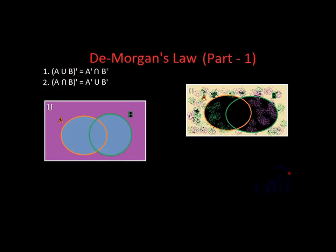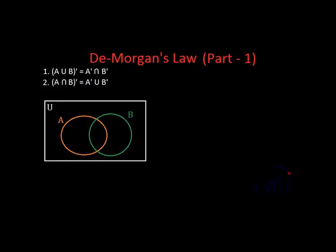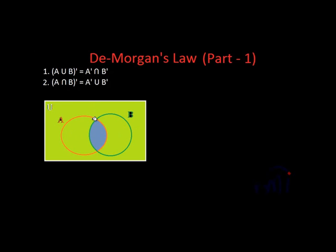This is the proof using a Venn diagram of the first law. In a similar way we can find the proof of the second law. Here we have our original drawing with one universal set and two sets A and B. In the second law we have to find the complement of A intersection B. A intersection B is actually this overlapping area, and the complement of A intersection B will be the whole area of the universal set which doesn't belong to A intersection B.